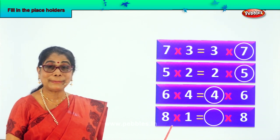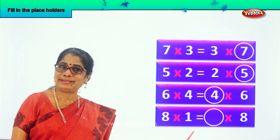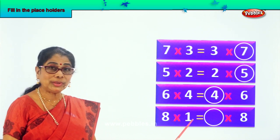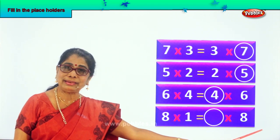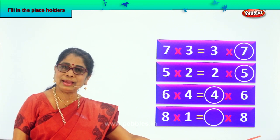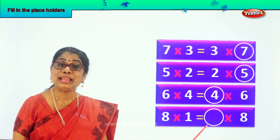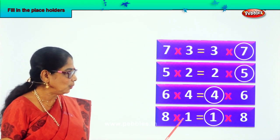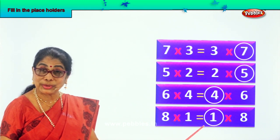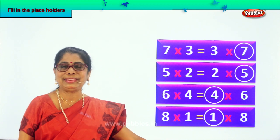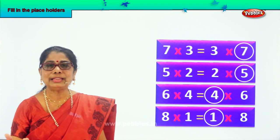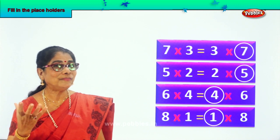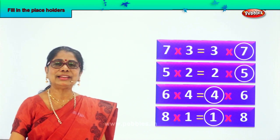Look at the last one. 8 into 1. 8 ones are 8. It's also equal to dash into 8. How to get the answer 8? What number should be there? 1. So 8 into 1 is also equal to 1 into 8. Now did you learn to understand filling up a placeholder?